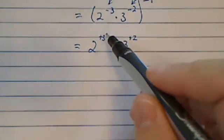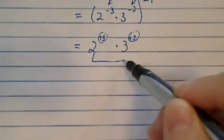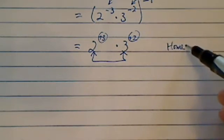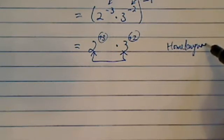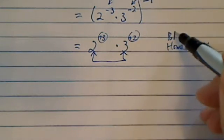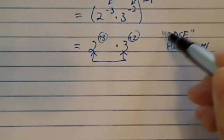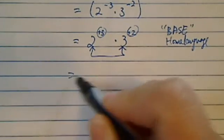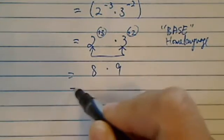Now, do not combine the exponents if you do not have the same base. Think of the base as your home language. The base. So if you don't have the same base, you can't speak the same language. Do not add it. So literally for here, you have 8 here times 9, which is 72.